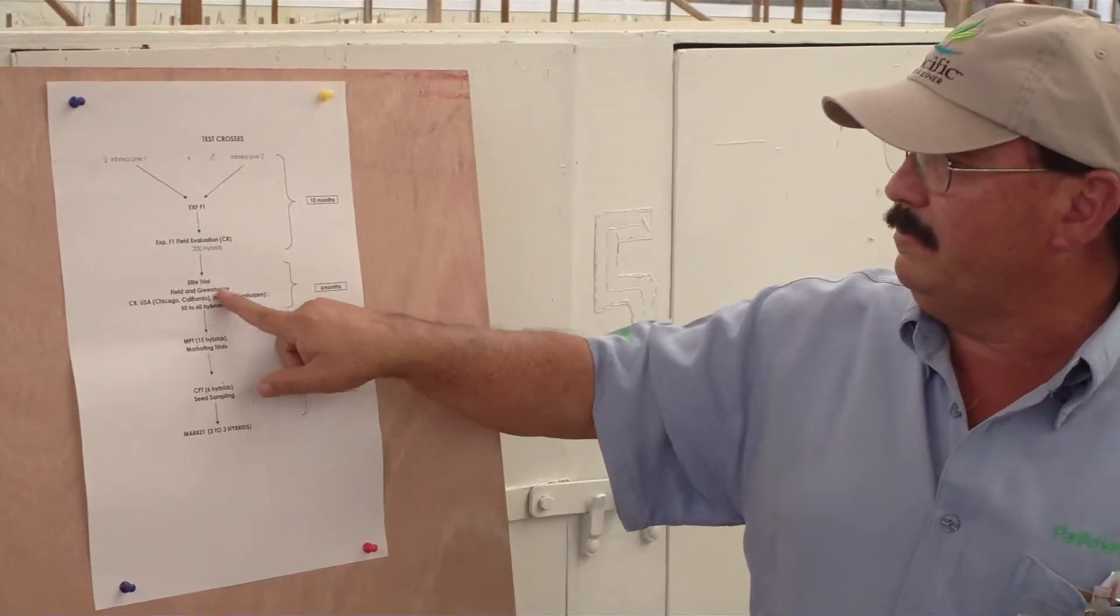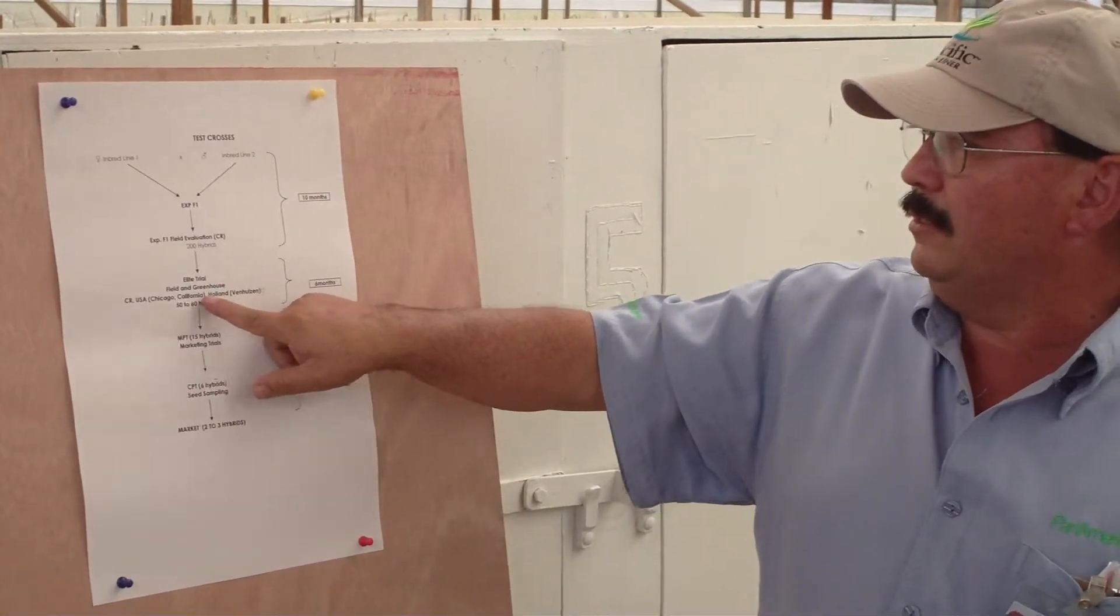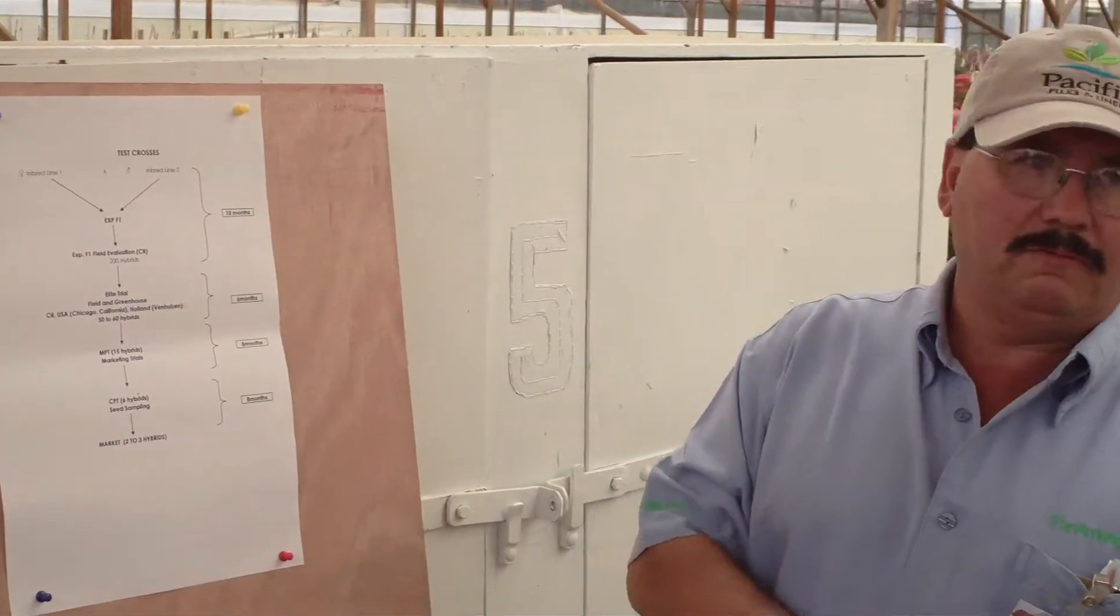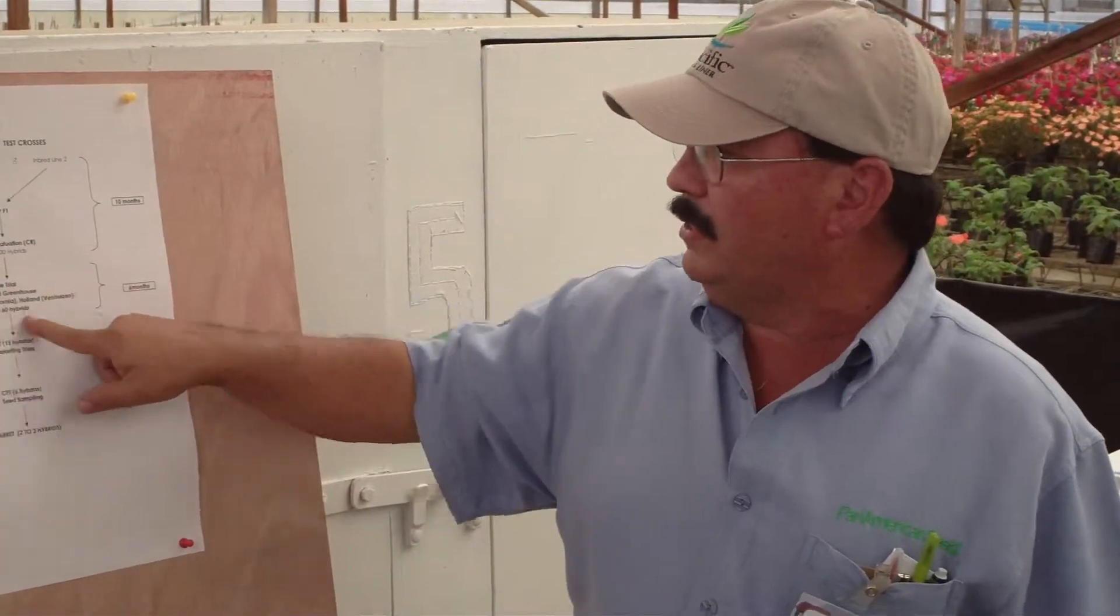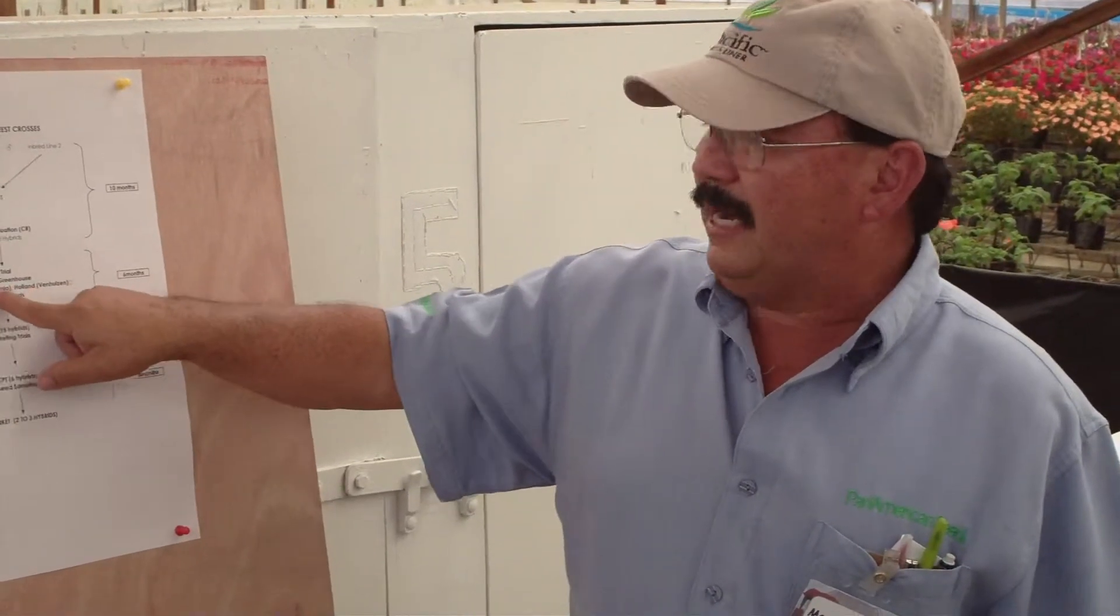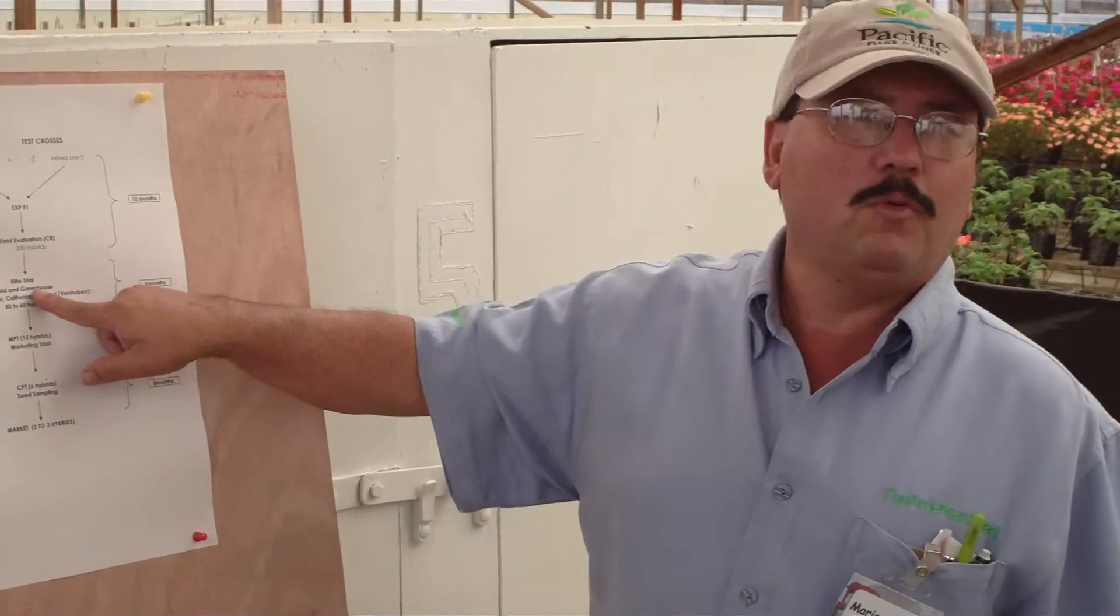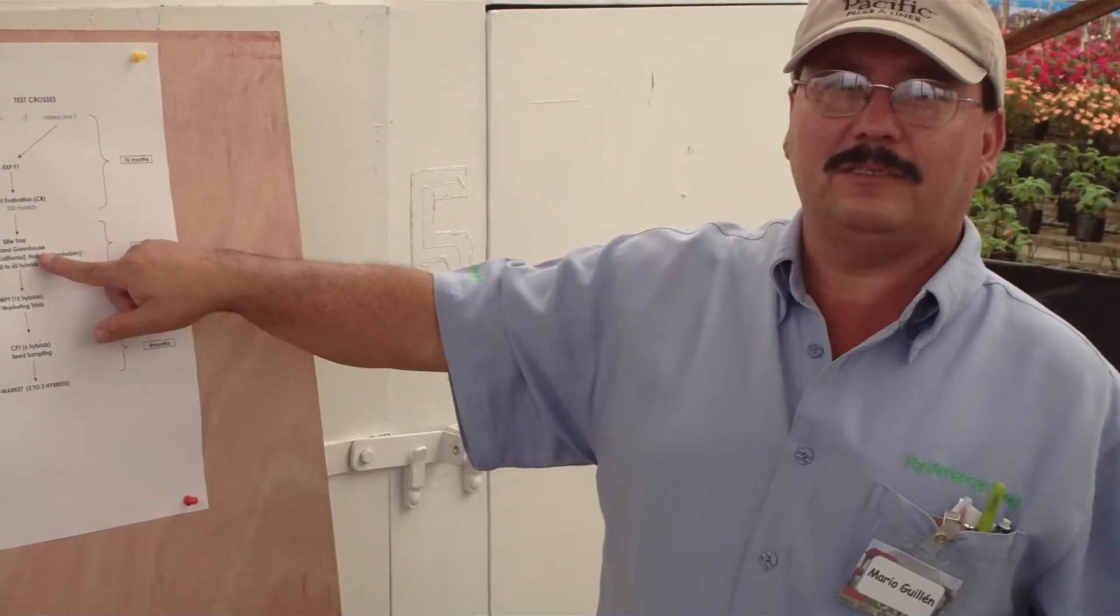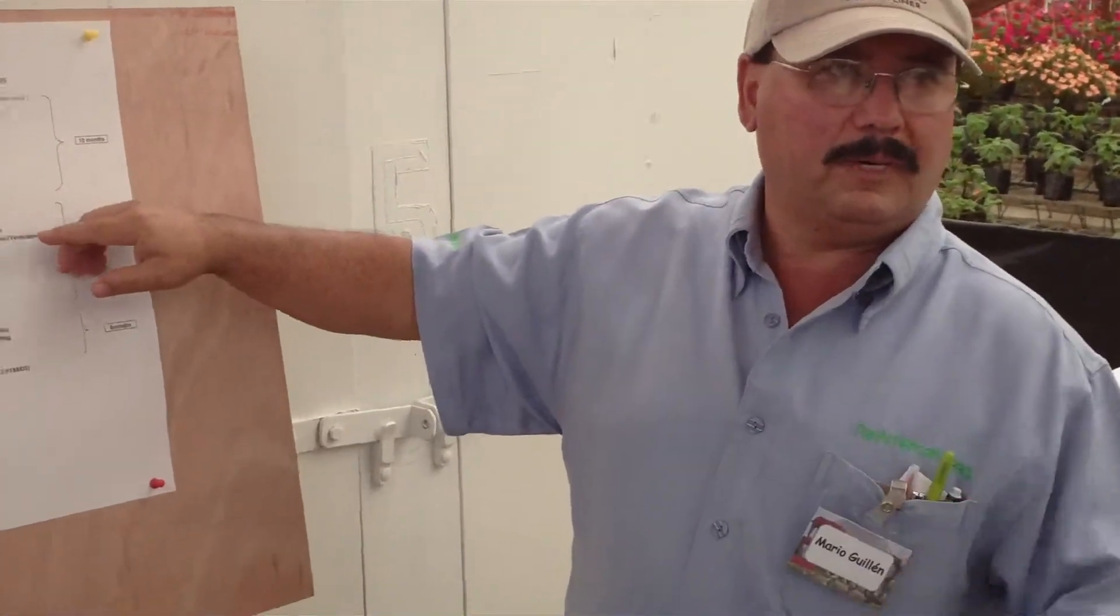When I get these 50 or 60 hybrids, I send to U.S., to Holland, and Costa Rica an elite trial to be evaluated in flats, in small container, greenhouse, etc., whatever. And once I get all the information on all of these sites, usually 15 hybrids perform very well in all the places. Because we have to be careful because we are not breeding just for Costa Rica or U.S. We have to select hybrids that perform very well in all of the parts.